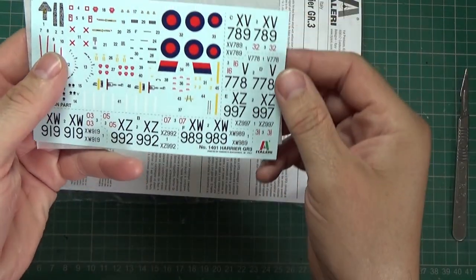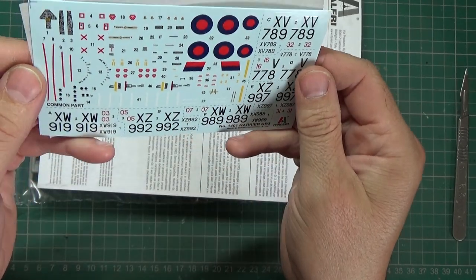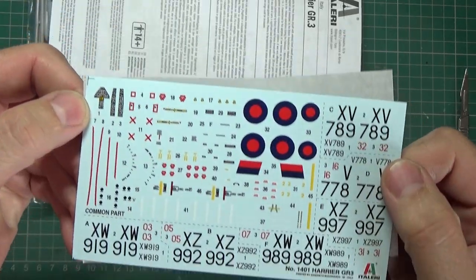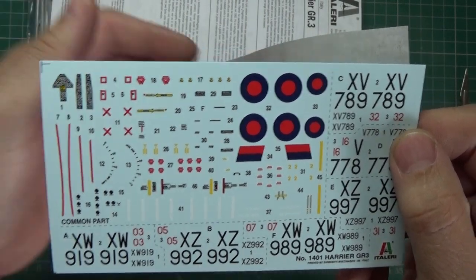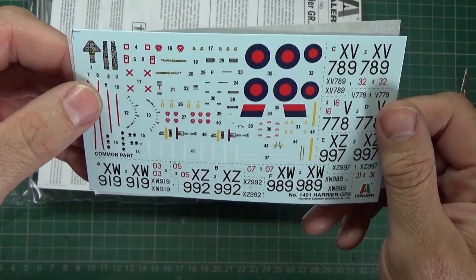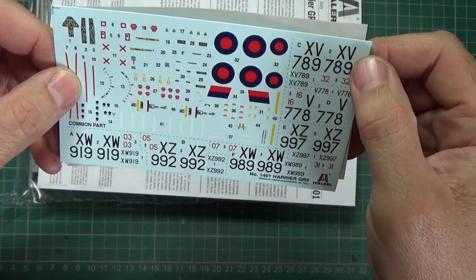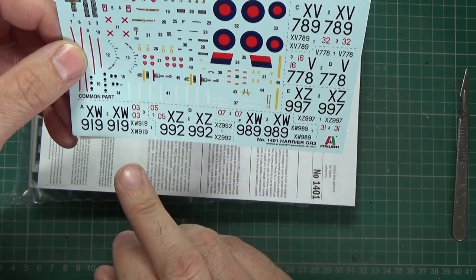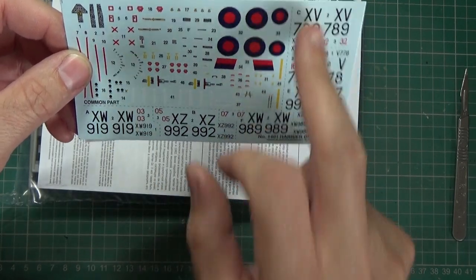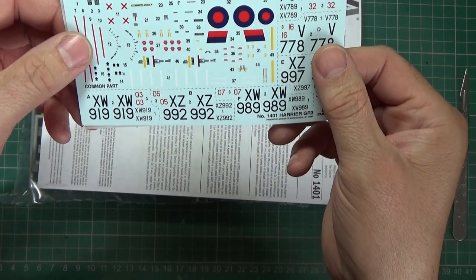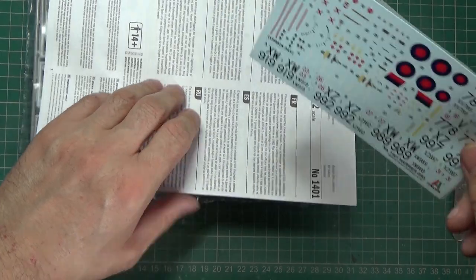There's your decals. Very nice, the detail. Very nice. You can see the cockpit, side panels for the cockpit. And then I think we've got one, two, three, four, five, six. So there's your six different variants or six different squadron marking ones.